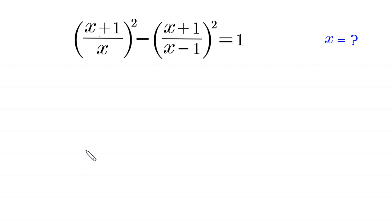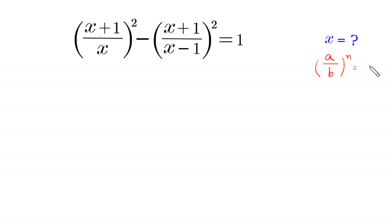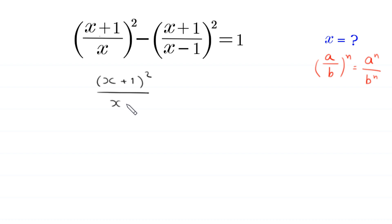Welcome to how to solve this very nice algebra equation: (x + 1/x)² - (x + 1/x - 1)² = 1. We need to find all possible values of x. Let's start by using the power rule: (a/b)ⁿ = aⁿ / bⁿ. This expression will become (x + 1)² / x² minus (x + 1)² / (x - 1)² is equal to 1.